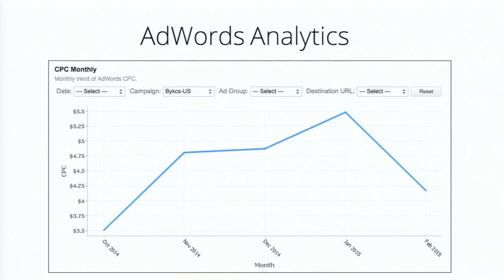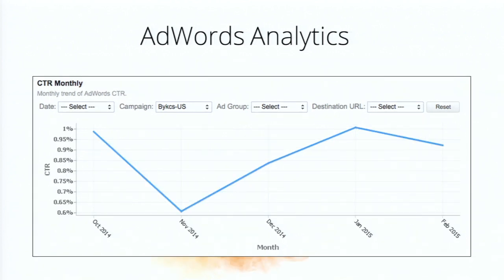Google Analytics allows you to map AdWords data — if you're advertising in AdWords — to your Google Analytics account. We provide reports on top of AdWords campaigns as well. One report gives you CPC (cost per click), and you can drill down to a particular campaign to see how it has performed over the last few months, or go from campaign to ad group to URL level. We also have CTR (click-through rate), which is the number of clicks divided by impressions. Again, you can drill down to a campaign, ad group, or destination URL to see the CTR.